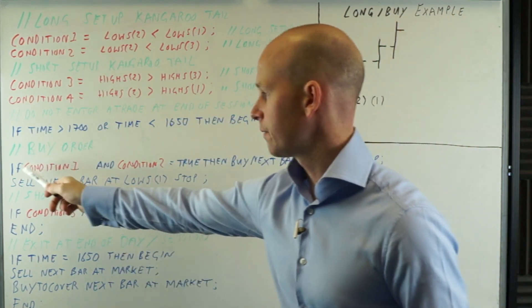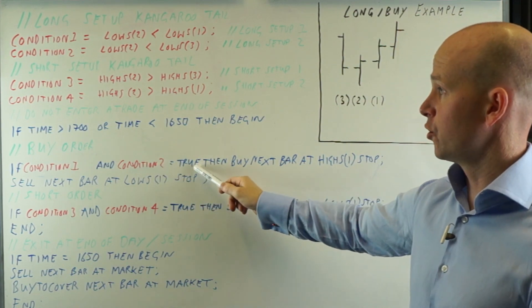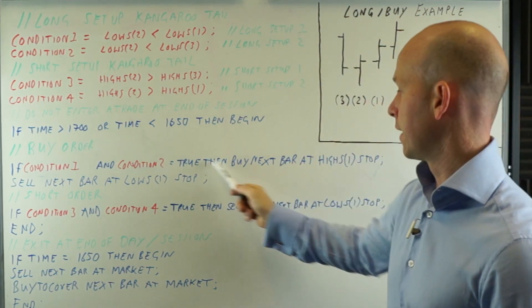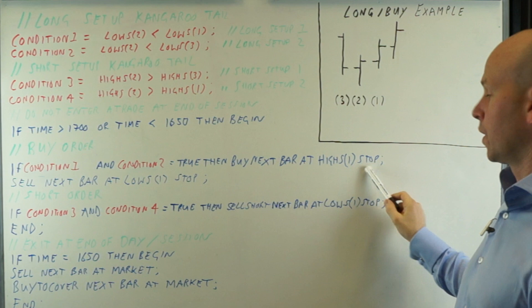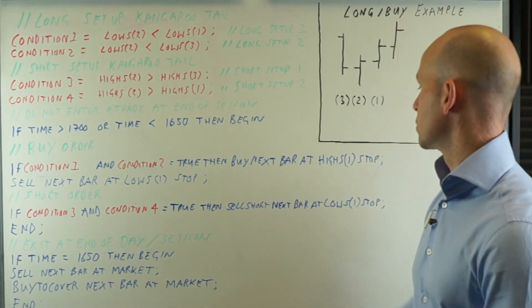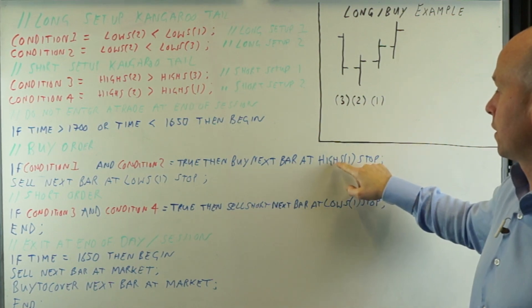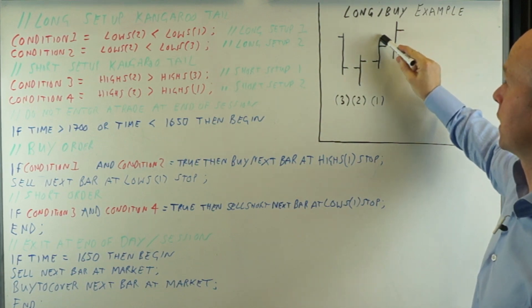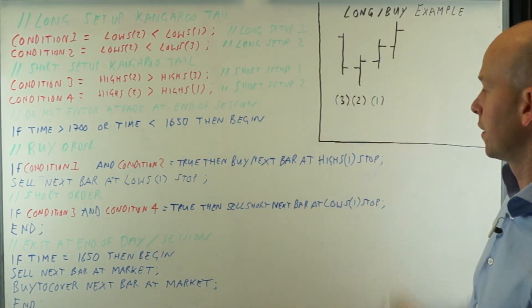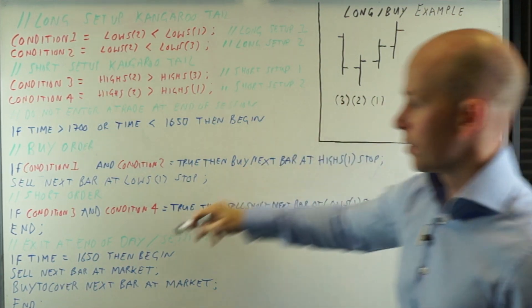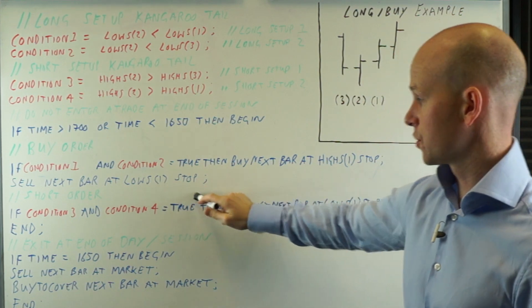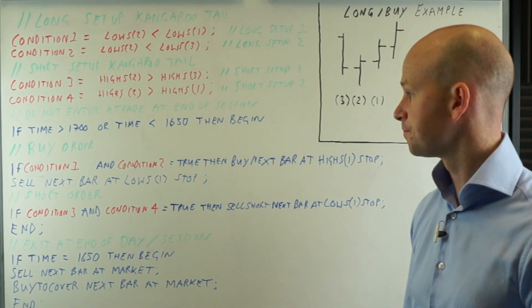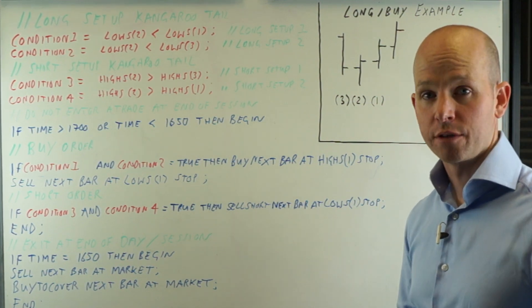So now we can start this section of the code. Now, buy order. If the condition one and condition two is true, so if that's true and that's true, so if we've got this setup, then buy next bar at highS1 stop. That means we want to place a buy stop order at the highS1. So this is bar one, this is S1, and the high is here. So we want to get in if the price goes above that high. Stop loss, sell next bar at the lowS1 stop. So the low of S1 is here. That's where we're going to get out of the market. And that's the simple entry for the buy order.